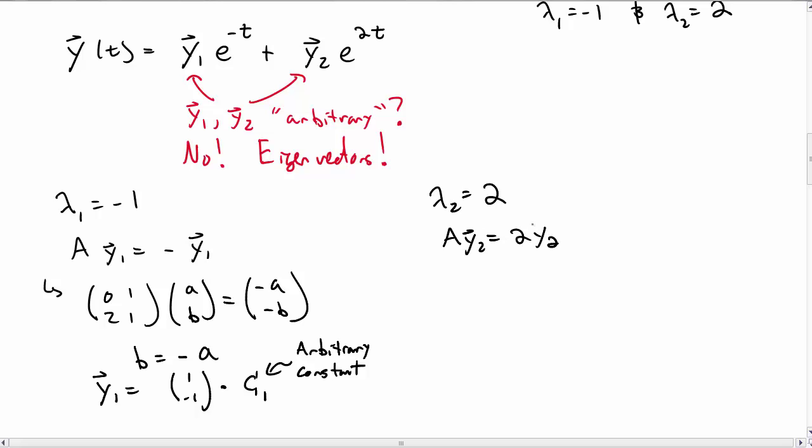For the other eigenvalue, lambda 2 equals 2, we do the same thing. We need to find the eigenvector which solves this. So we write y2 as some a, b. And we find that b must be 2a. Or rather, the eigenvector could look something like 1 times 2, times some other arbitrary constant. Let's call it c2.